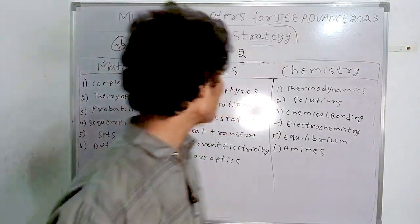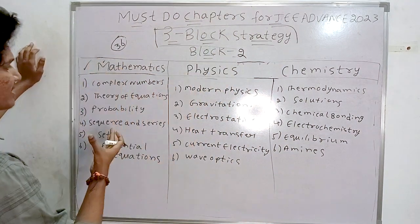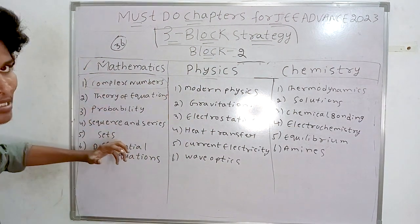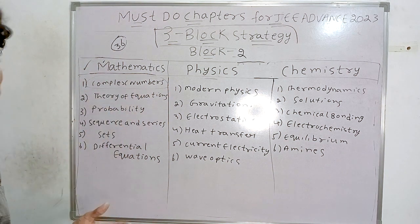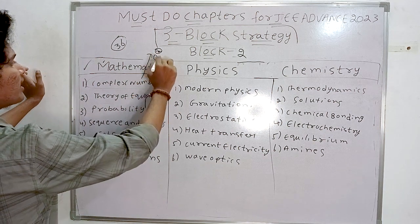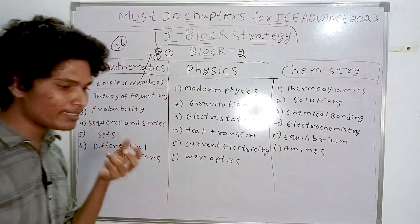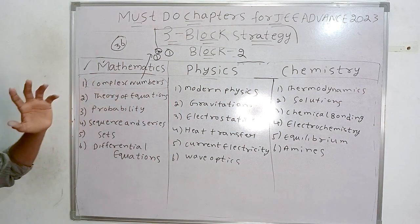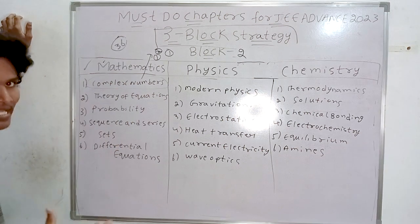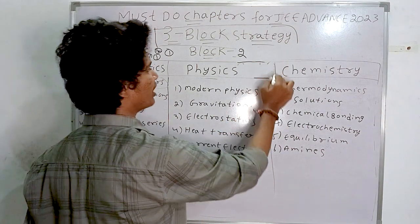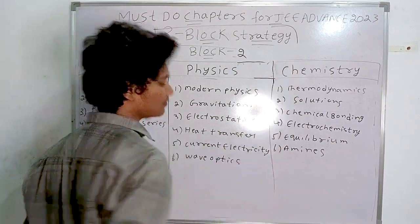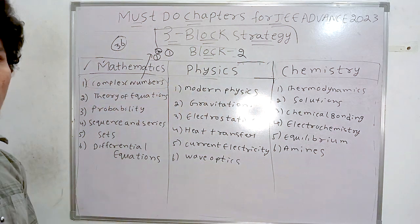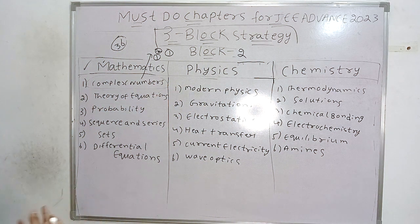Block two mathematics includes complex numbers, which is really difficult for JEE Advanced. In 2022, we got two questions — one easy, one very difficult and time-consuming. You can do just the basics. An important quote from my master: don't leave any chapter; read at least the basics, because basics help you solve at least the simpler questions.